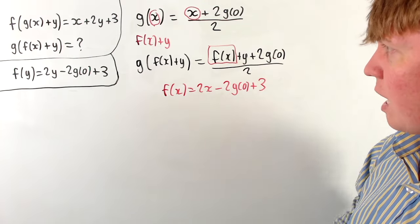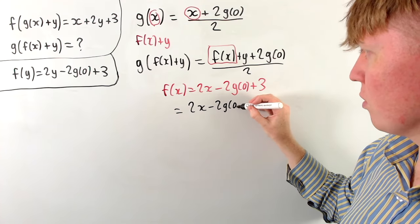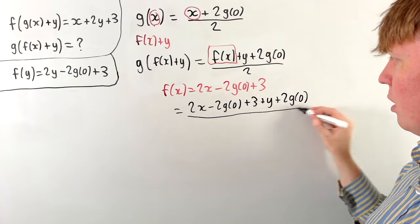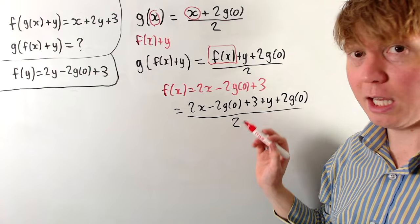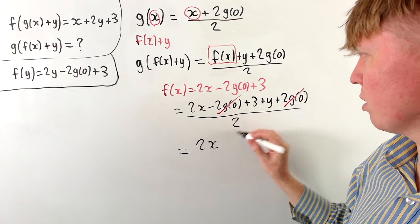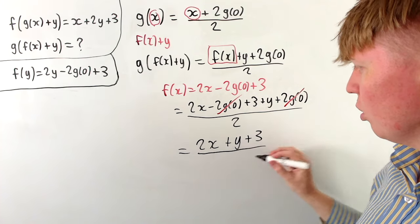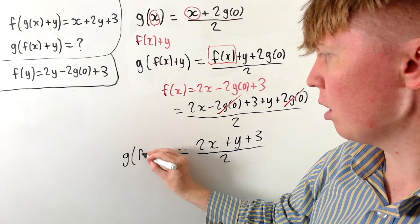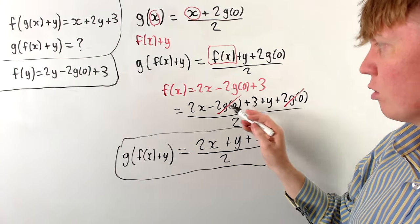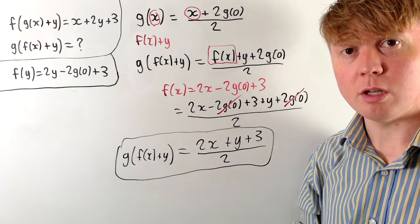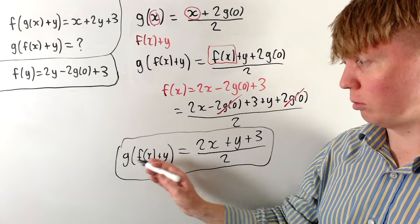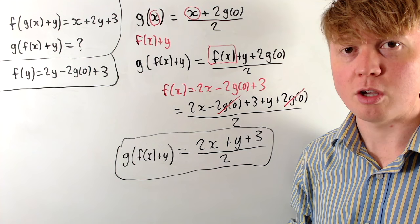Substituting this in, we get 2x minus 2g(0) plus 3, then plus y and plus 2 times g(0), all divided by 2. This is really nice because the negative 2g(0) and positive 2g(0) cancel out. So we're left with a unique answer: 2x plus y plus 3, all divided by 2, which equals g of f of x plus y. Even though the functions f and g are not uniquely defined — only defined up to a constant — the answer g of f of x plus y is uniquely defined because the constant terms cancel.